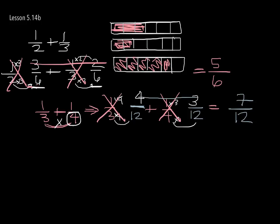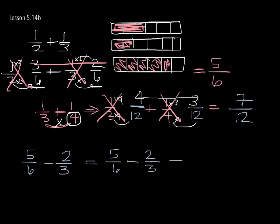Let's look at a subtraction problem. I'm going to take five-sixths and subtract two-thirds. The first thing we have to do is see where these two languages are going to meet — six and three. Conveniently, six and three are going to meet at six. So I can keep five-sixths the same, but I'm going to have to convert two-thirds to something over six. What do I do to three to get to six? I times it by two. Whatever I do to the bottom, I do to the top — two times two is four. Now I can get rid of this because I've already translated. I have five-sixths minus four-sixths, my answer is going to be something over six, and five less four is one — so the answer is one-sixth.